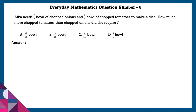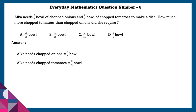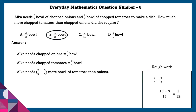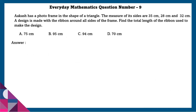Question 8: Alka needs 3/5 bowl of chopped onions and 2/3 bowl of chopped tomatoes to make a dish. How much more chopped tomatoes than chopped onions did she require? Alka needs 2/3 minus 3/5 more bowls of tomatoes than onions, that is 1/15 bowls.